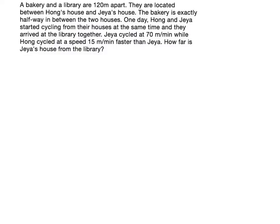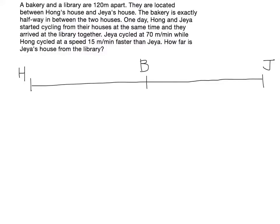Let's draw the distance line between Hong and JS's houses. This is JS's house. This is Hong's house. The bakery is exactly in the center. One day Hong and JS started cycling from their houses — Hong started cycling from here and JS started cycling from here.